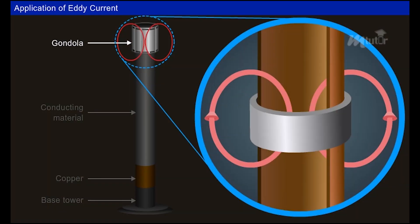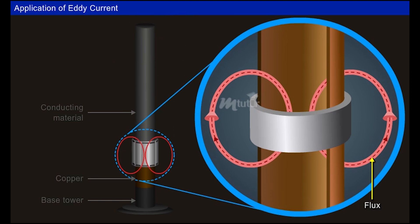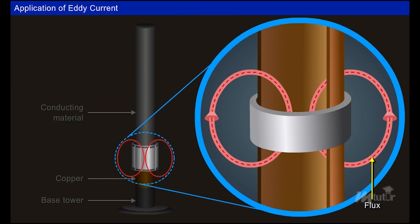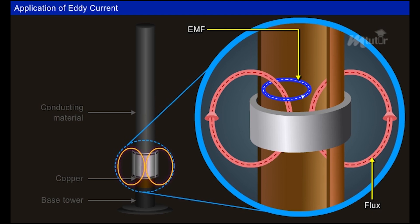The magnetic fields due to the permanent magnets travel down as the gondola drops fast from the top of the tower. Once the gondola reaches the copper part of the tower, it starts to slow down because as per Faraday's law of electromagnetic induction, an EMF is induced in the tower due to the change in the magnetic field linking the tower.